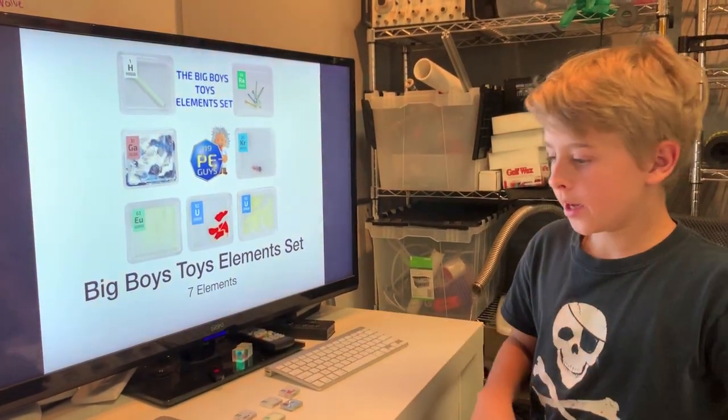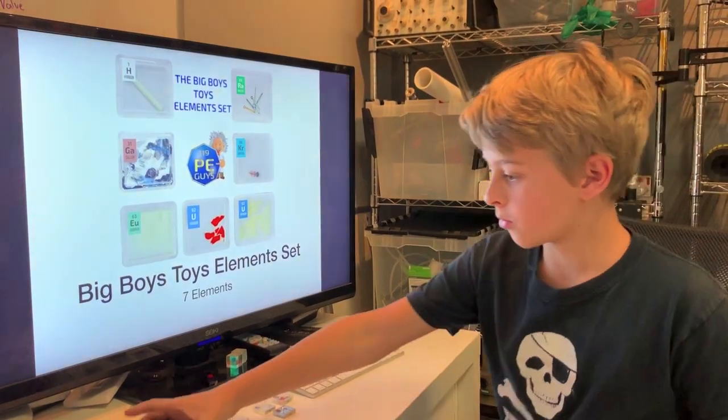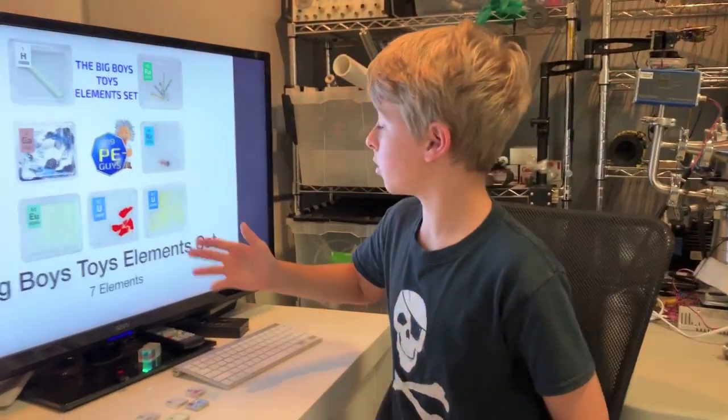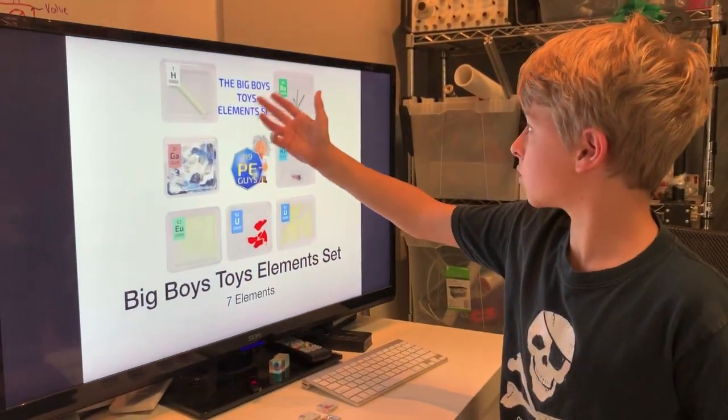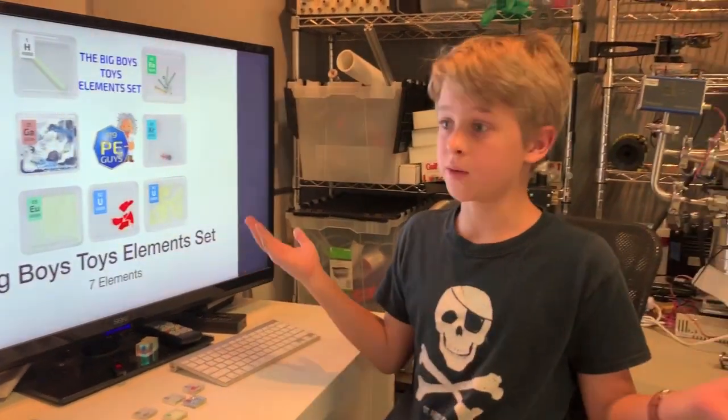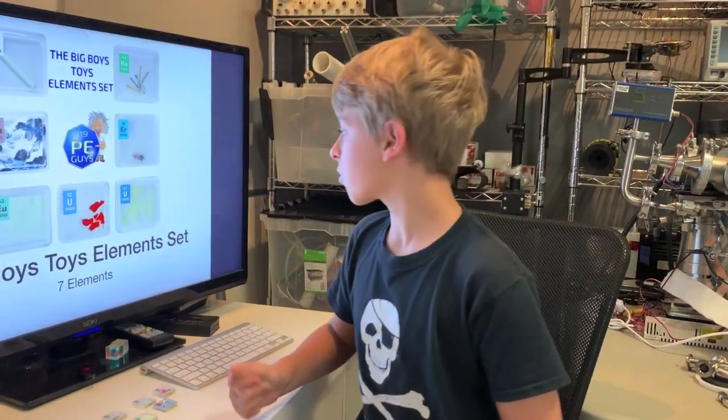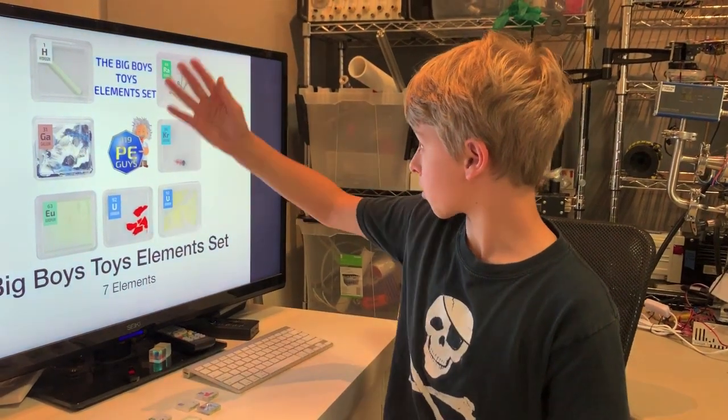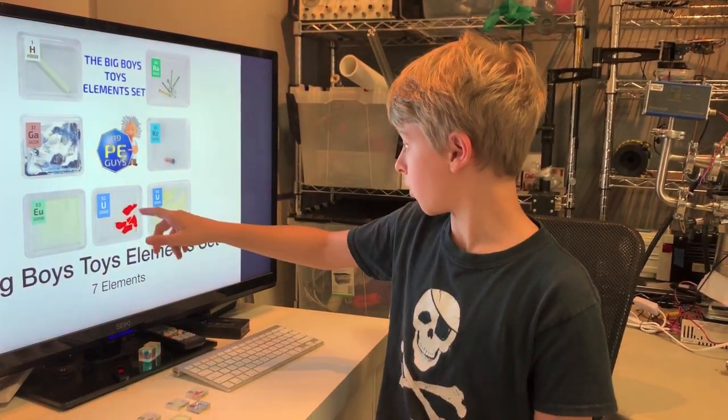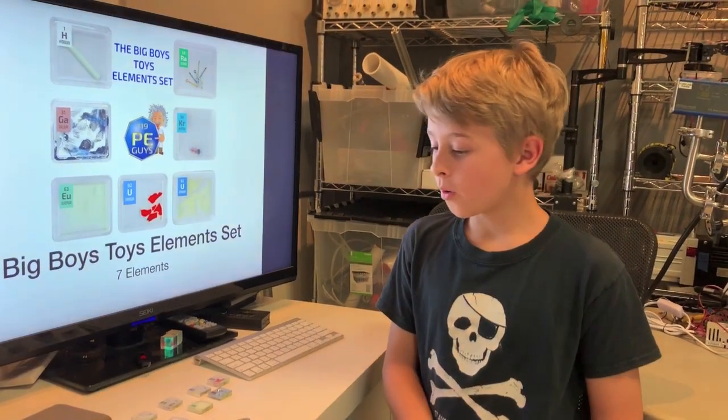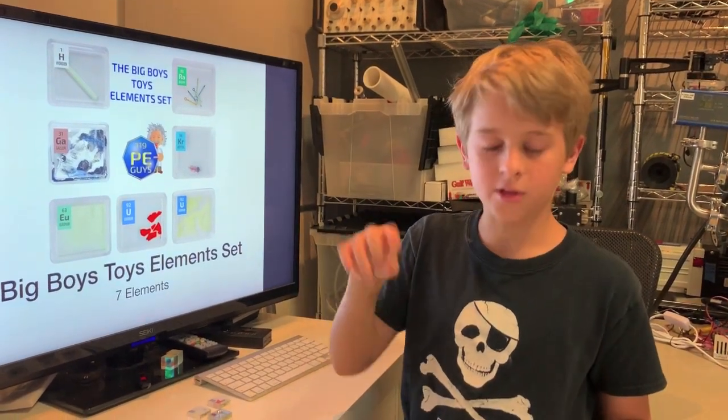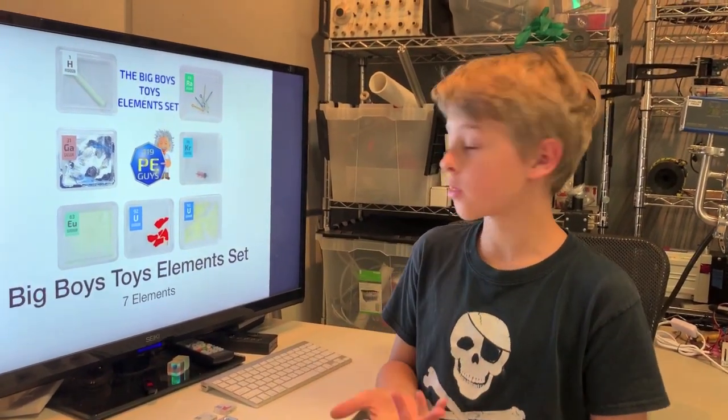We got this off eBay and it's pretty neat. It comes in this little box, comes with all these elements and magnets to hang it up. Pretty nice. All you have to search is on eBay, the Big Boy Toys Element Set, seven elements. That's pretty much all you have to search up. It's around $75 plus shipping and tax, but pretty reasonable for these element samples, especially that uranium pewter plate. Thanks for watching. If you want us to do more unboxing videos, please put your feedback in the comment section below.